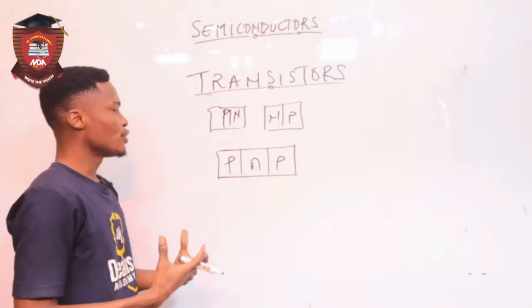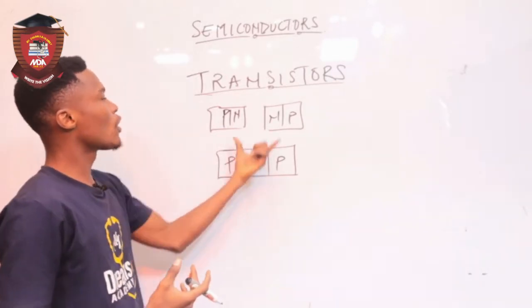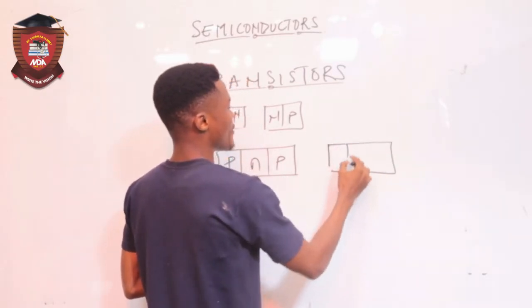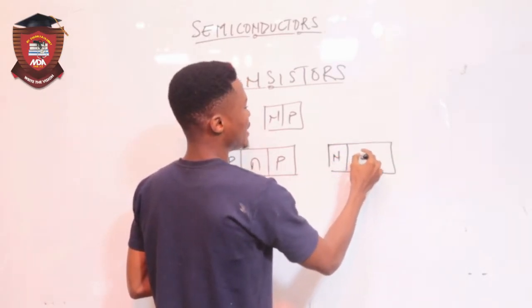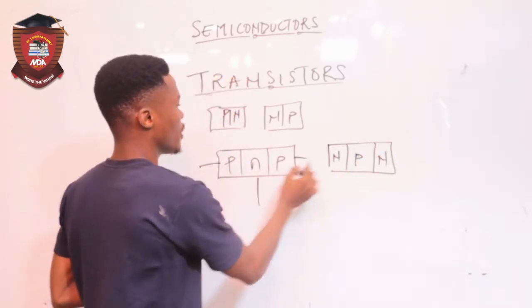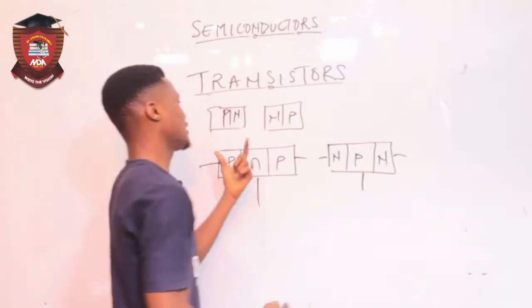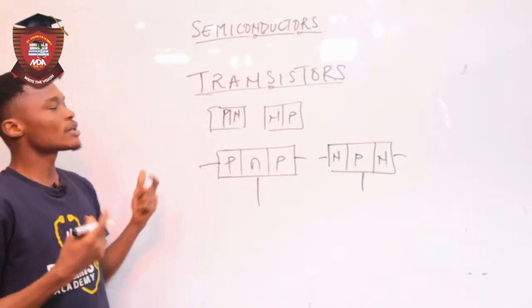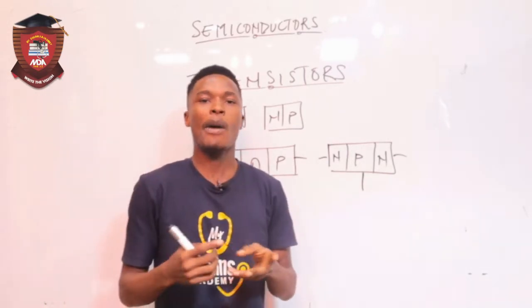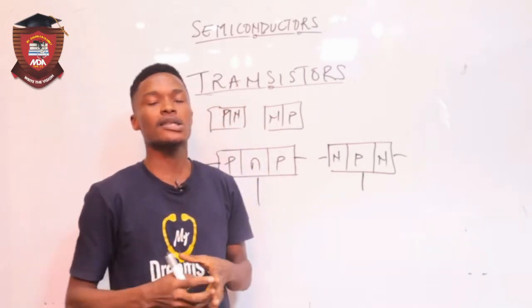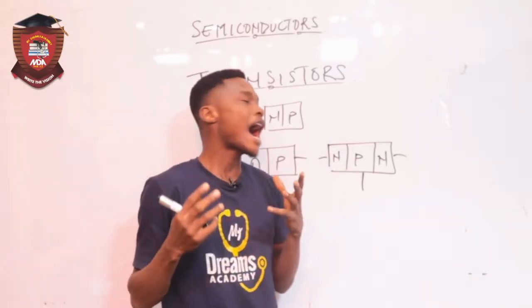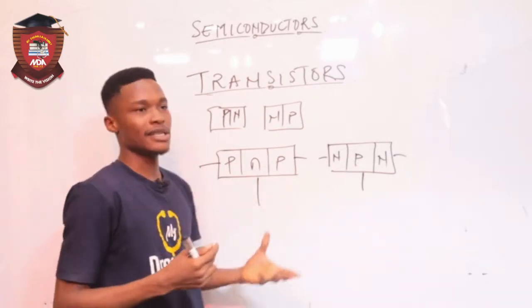From what I have drawn, you can see that we can have two configurations for this. I can have one configuration with N on this side, P at the center, and N on this side. Transistors are all around us — our mobile phones, the microprocessors in our laptops, and many devices we use are all made up of transistors.